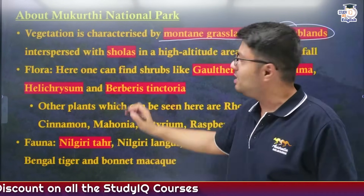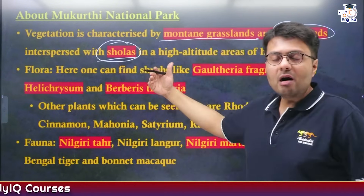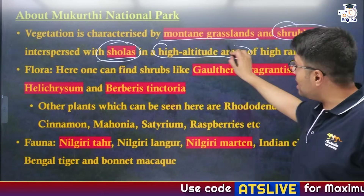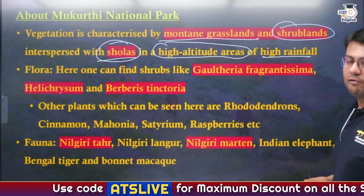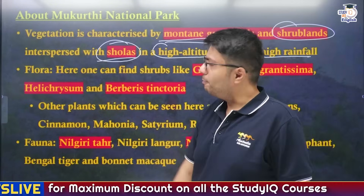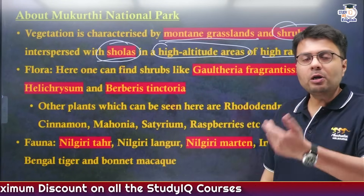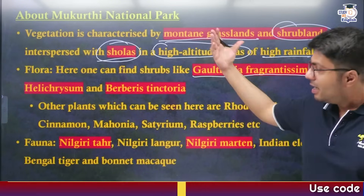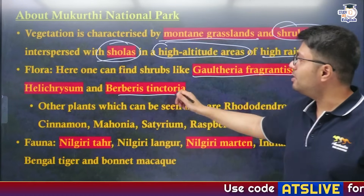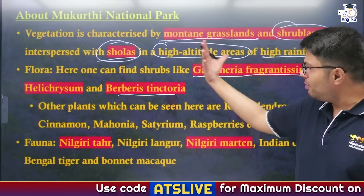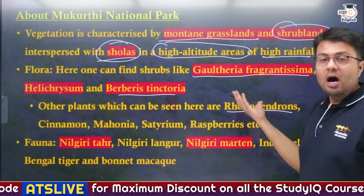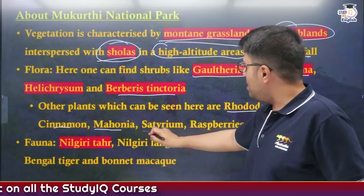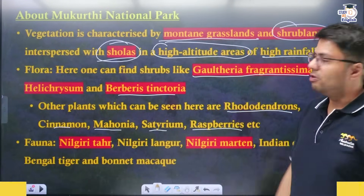The most important vegetation in the region is the Shola grasslands, which are characteristic of the Nilgiri highlands — high-altitude grasslands with high rainfall. Important shrubs include Gaultheria fragrantissima, Helichrysum, and Berberis tinctoria, in addition to common plants like Rhododendrons, Cinnamon, Mahonia, Cytisus, and Raspberry.